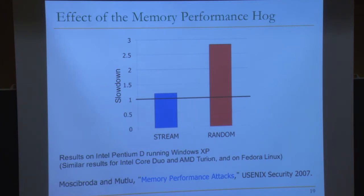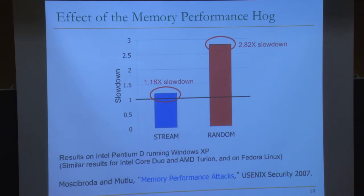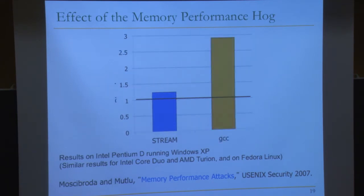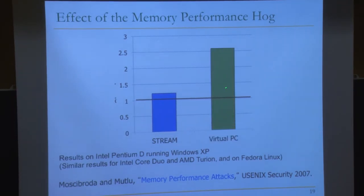So there is a problem — you have a memory hog application. Results from a real system, December 2006 on an Intel Pentium D running Windows XP: stream slows down by 18%, random slows down by almost 3x. Very similar to MATLAB and GCC. The only difference between the two workloads is the row buffer hit rate. GCC gets slowed down significantly, as does Microsoft's virtual PC.